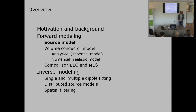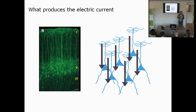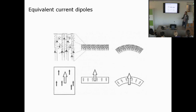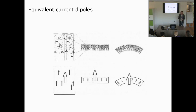Forward modeling requires a source model and a volume conduction model. We have pyramidal cells that are nicely aligned; when action potentials arrive at a synapse, currents flow along the dendritic tree. Each dendritic tree can be modeled with an equivalent current dipole — a mathematical description of two poles, like a positive and negative pole, similar to a battery. It produces a current equivalent to that produced by a neuron, so it's a simplification but a very useful building block.